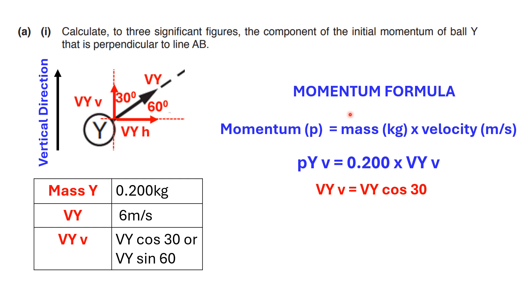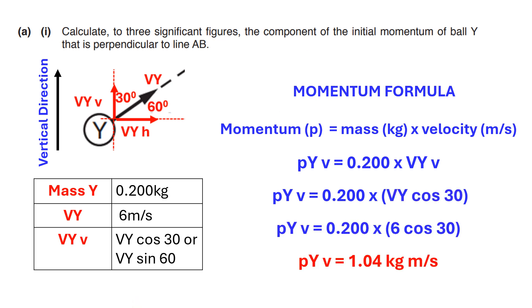So, to calculate the momentum, I need the formula. So, the formula is the mass in kilograms times the velocity in meters per second. So, the mass of the ball Y is 0.2 kilograms and the vertical component is the value of the velocity, which is 6 meters per second, times cosine of 30 or you can use the sine of 60. I am doing the option of cosine of 30. In this step, you do the substitution and then calculations. And here, the result of the ball Y initial vertical momentum is 1.04 kilograms meters per second with three significant figures.